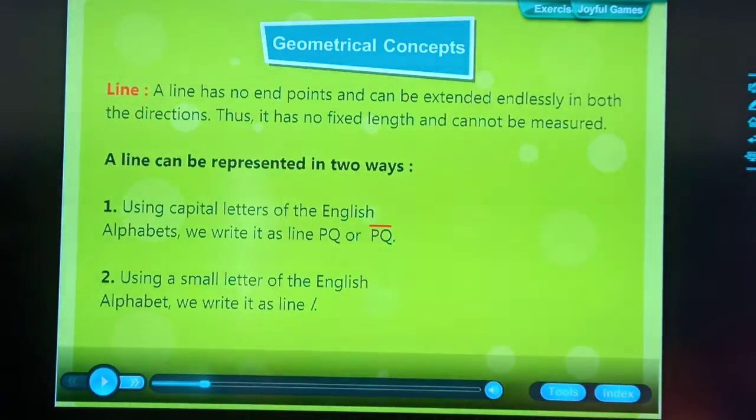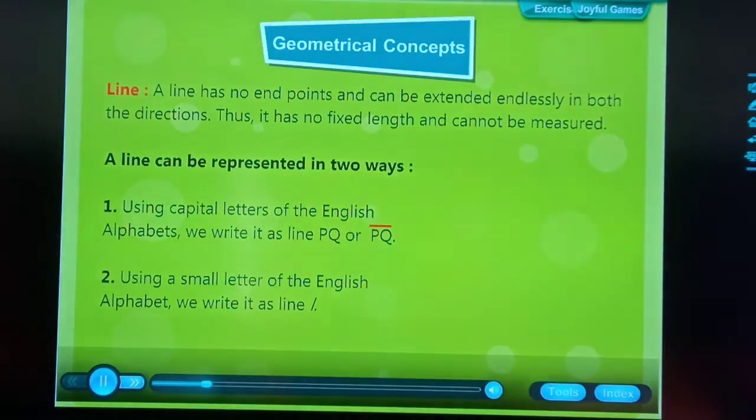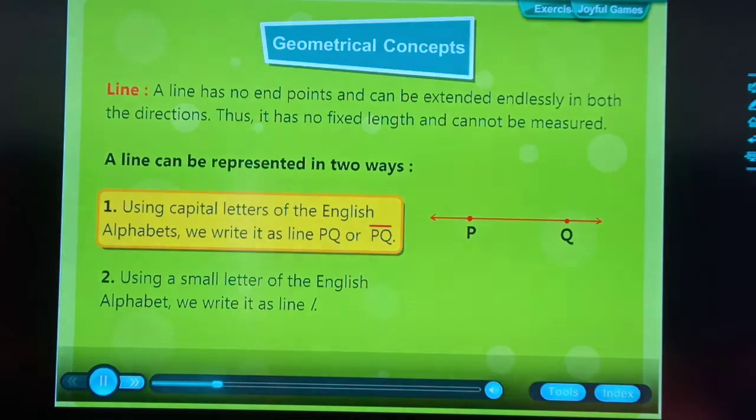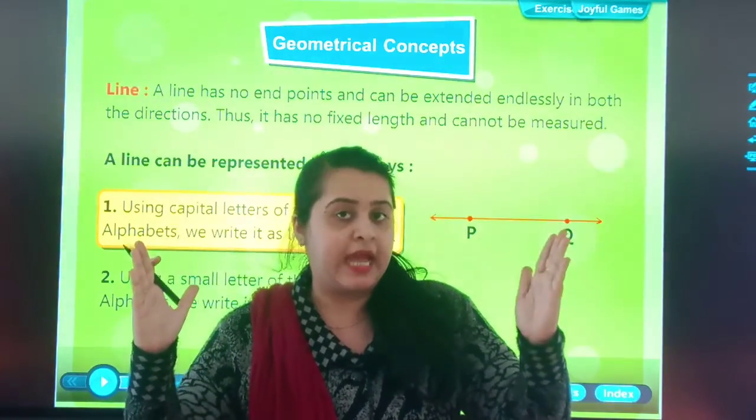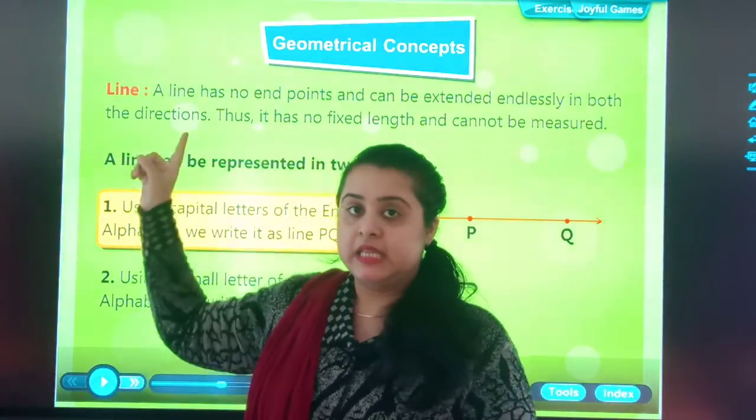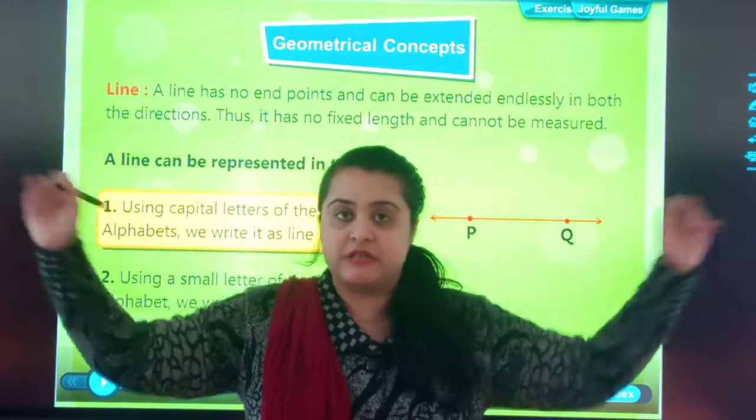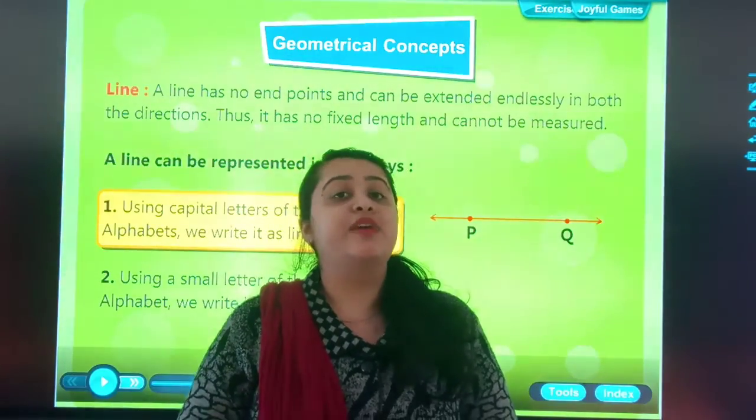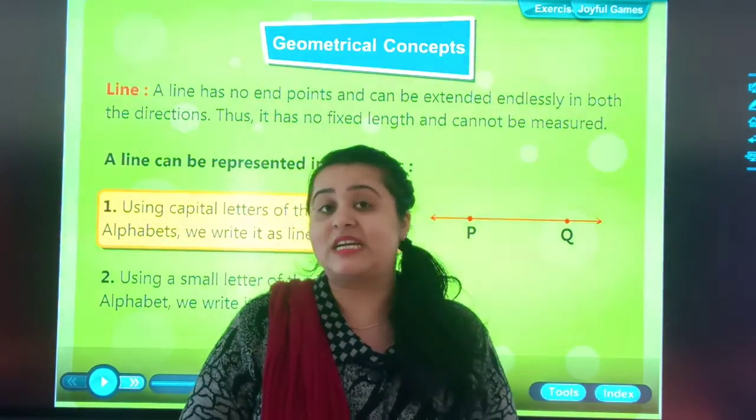Line. So students, now we will be discussing the line. A line has no end and can be extended endlessly in both the directions. Thus, it has no fixed length and cannot be measured. A line can be represented in two ways. Using capital letters of the English alphabet, we write it as... Students, line segment has starting and ending points and that can be measured. But line has no starting point, no ending point. It can increase in both the directions. Okay students, this is the confusion. We confuse usually in line and line segment. Line segment is fixed and it can be measured. But line is not fixed and it cannot be measured.